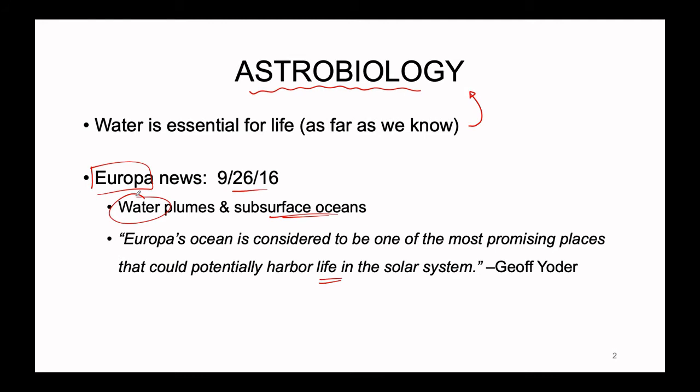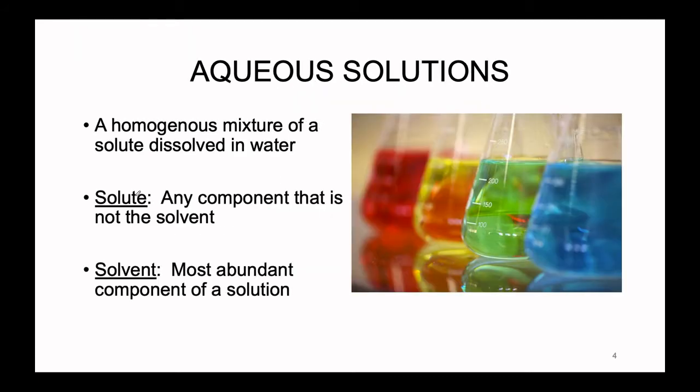Jeff Yoder, one of the scientists working on the Europa project, noted that Europa's oceans are considered one of the most promising places that could potentially harbor life in the solar system. We don't know for sure whether there is life underneath Europa's subsurface oceans yet — it's likely bacterial — but where there is water there are more than likely complex chemical reactions that can potentially lead to life as we understand it on Earth.